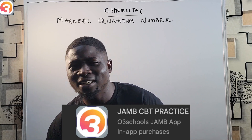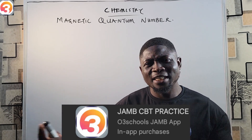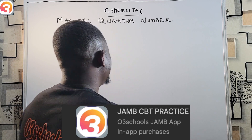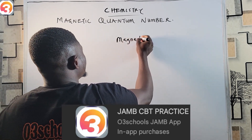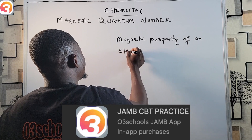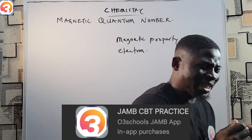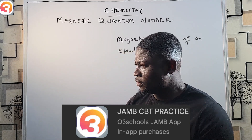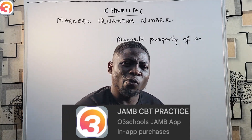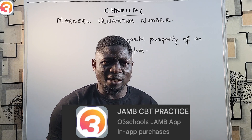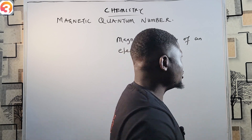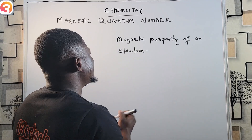Now let's head back to what we have for today — the magnetic quantum number. From the name, it suggests that it describes the magnetic property of an electron. So the magnetic quantum number, as the name suggests, describes the magnetic property of an electron and tells us how an electron will behave when it is placed in a magnetic field.